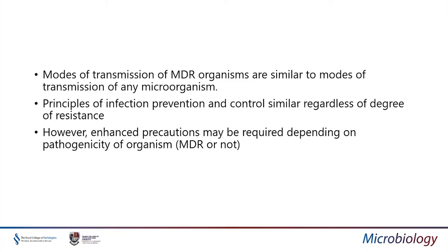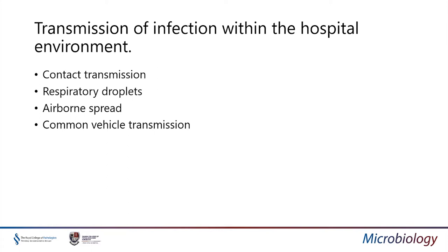The modes of transmission of multidrug-resistant organisms are similar to those of any microorganism, and the principles of infection prevention and control are similar regardless of the degree of resistance. We should always do our basic precautions; however, sometimes we require enhanced precautions depending on the pathogenicity of the organism. Transmission within the hospital environment generally occurs through four means: contact transmission, respiratory droplets, airborne spread, and common vehicle transmission.